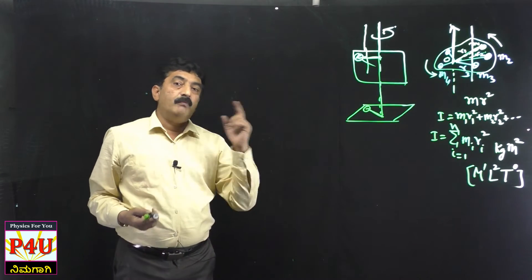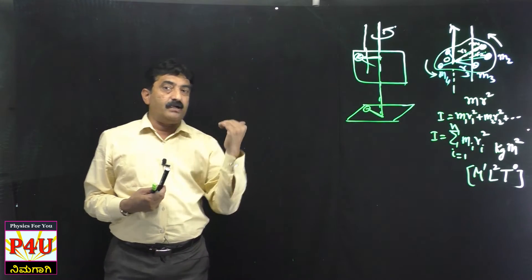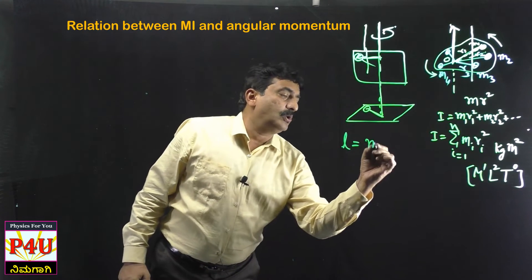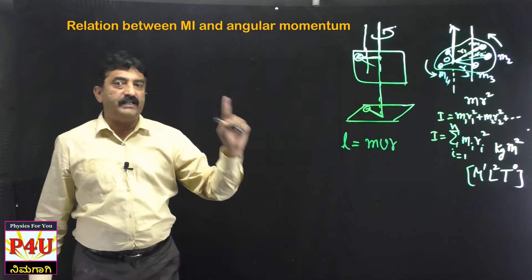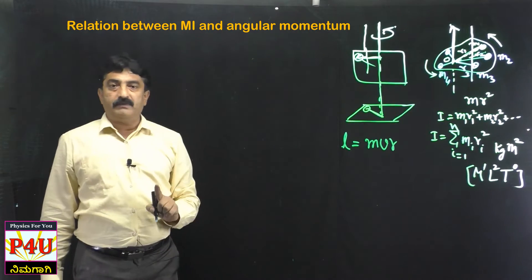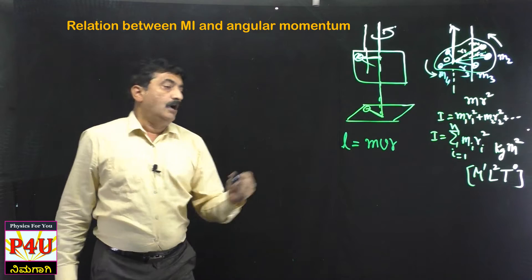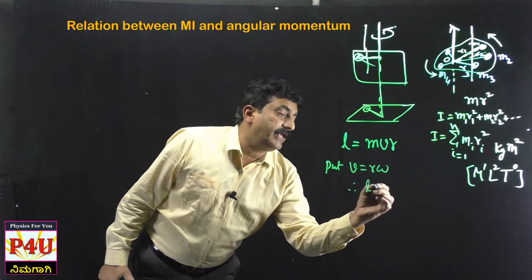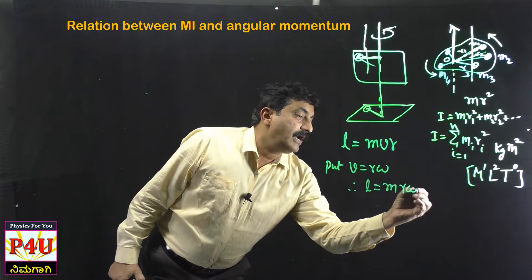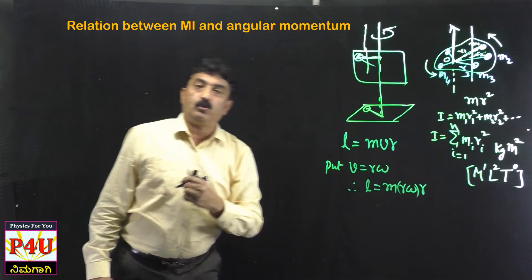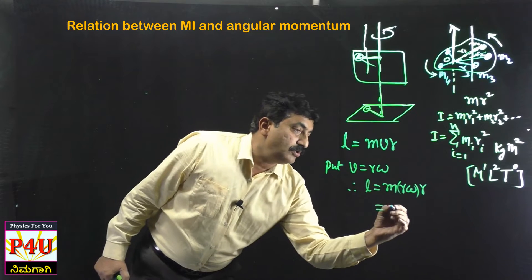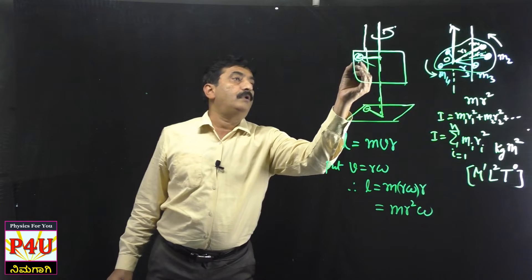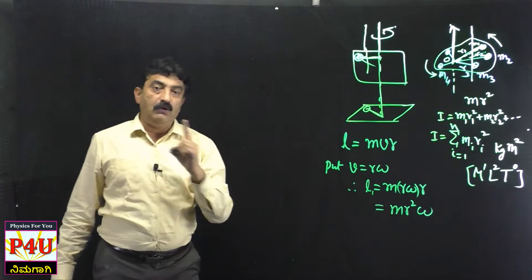Now, the relation between Moment of Inertia and angular momentum. Recall that angular momentum is given by L = MVR (with sin θ = 1 for θ = 90°), so L = MVR. Substituting V = Rω, we get L = M·R·ω·R = MR²ω. This is the angular momentum of one particular particle — call it L1 = M1R1²ω.